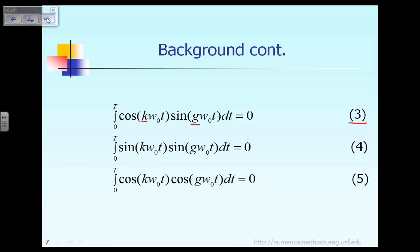Similarly, equation 4 states that the integral of sin(kω₀t) times sin(gω₀t) dt is equal to 0 — again for the case where k and g are different in general. Equation 5 states that the integral of cos(kω₀t) times cos(gω₀t) is equal to 0. Those are the five basic equations that I'm going to prove, in order to establish useful relationships for future development.